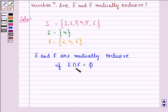Now intersection of two sets is the set of those elements which are common to both E and F. We see that the elements that are common to E and F are only 4. So E intersection F is 4, that is not equal to phi.